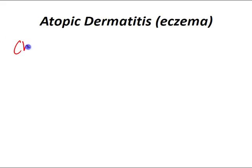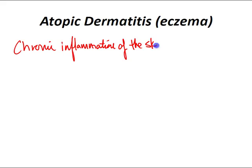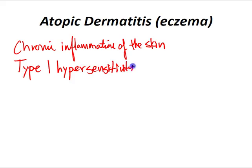Atopic dermatitis or eczema is a disease characterized by chronic inflammation of the skin, which is atopic, hereditary, and non-contagious. This is a type 1 hypersensitivity reaction — that is high yield. Most people think of anaphylaxis when they think of type 1, but eczema is actually a type 1 hypersensitivity reaction. The skin on the flexural surfaces of the joints — for example, the inner sides of the elbows and knees — are the most commonly affected regions.